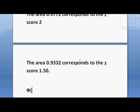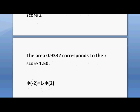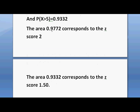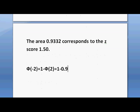Φ(−2) equals 1 minus Φ(2). So Φ(−2) represents the area for the z-score minus 2, and Φ(2) represents the area for the z-score plus 2. We have the formula: Φ(−x) equals 1 minus Φ(x). So Φ(−2) equals 1 minus Φ(2), which equals 1 minus 0.9772, which equals 1 minus probability x is greater than 3.